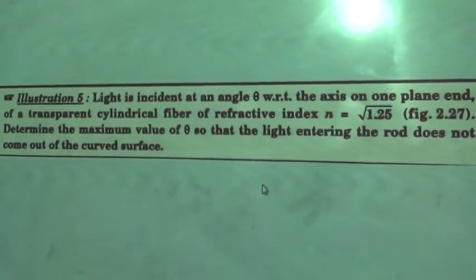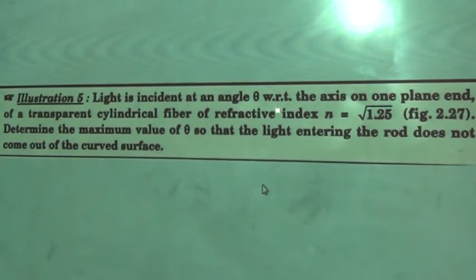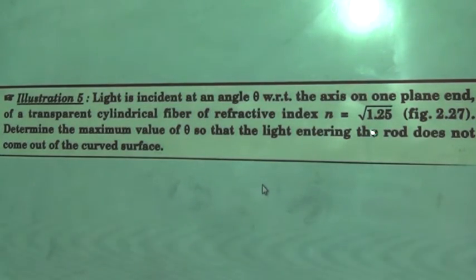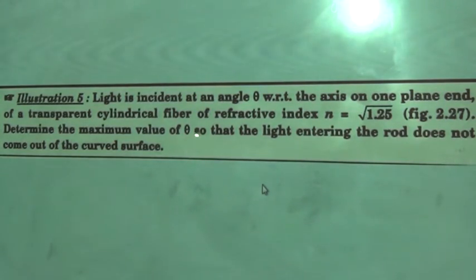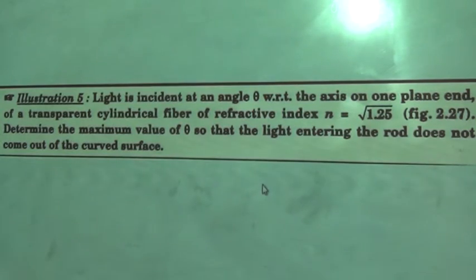We are going with plane refraction applications. Light is incident at an angle theta with respect to the axis of one plane end of a transparent cylindrical fiber of refractive index under root 1.25. Determine the maximum value of theta so that light entering the rod does not come out of the curved surface. You understood the question — what is it asking?